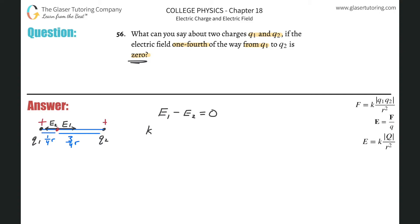So it's going to be k multiplied by now q sub one, all divided by r sub one squared, minus then k times q sub two all over r sub two squared. And that's all equal to zero.